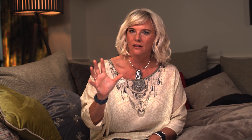I want you to take a look at this very simplified version of the brain. We all have this inside of us. I'm not a brain scientist, but at a basic level I want to talk about the three ways in which the brain functions and the impact that has on the way we learn and get people engaged and curious.